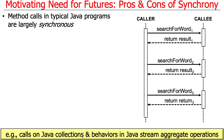As I alluded to at the end of the last slide deck on the reactive model, method calls in traditional Java programs — most of the stuff you've probably written up to this point — are largely synchronous. For example, if you make a method call on a hash map or an array list in the Java collections framework, those are synchronous calls. The behaviors in stream aggregate operations, method references and lambda expressions, are also typically synchronous.